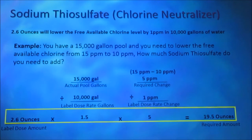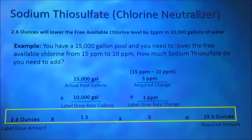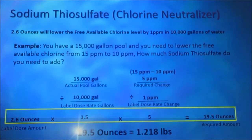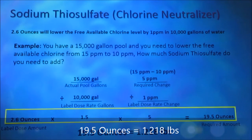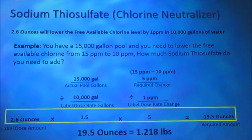Sodium thiosulfate is a dry chemical. We need to convert that to pounds. There are 16 ounces in a pound. To convert 19.5 ounces to pounds, we divide 19.5 by 16. 19.5 divided by 16 is 1.218 pounds. The answer is 1.218 pounds.